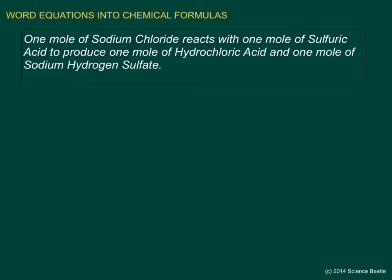I'm going to begin with this problem that I already have written out for us. We've got one mole of sodium chloride reacting with one mole of sulfuric acid to produce one mole of hydrochloric acid and one mole of sodium hydrogen sulfate. The trick is to convert all of this into a chemical formula using symbols, coefficients, and subscripts.